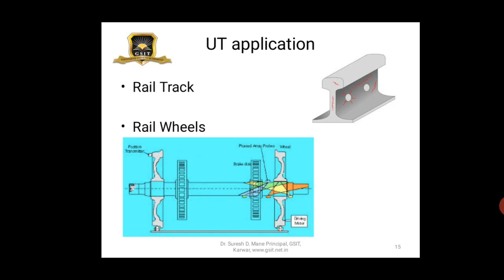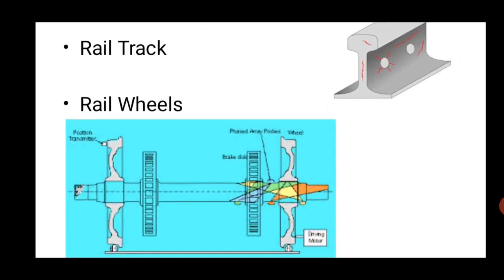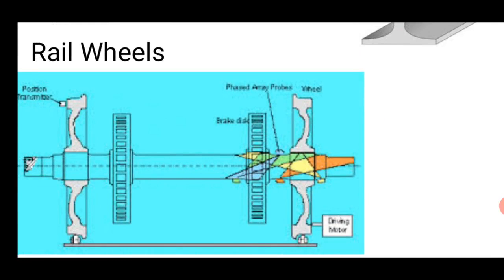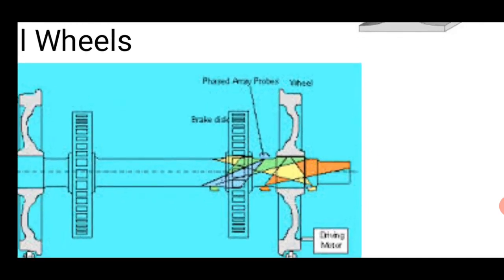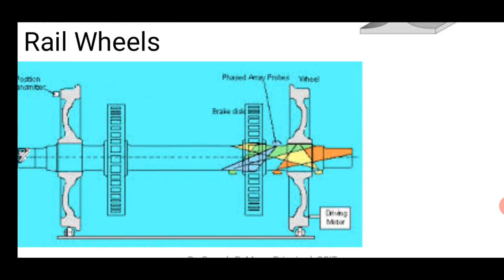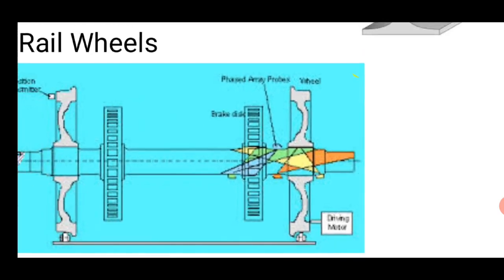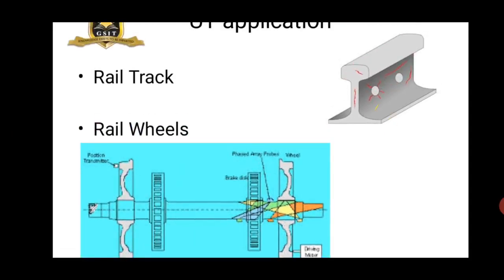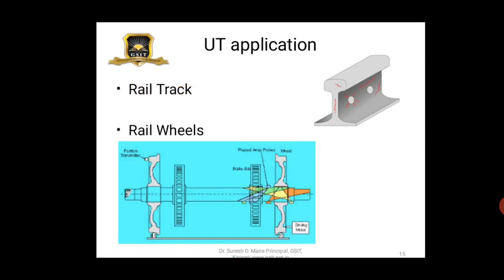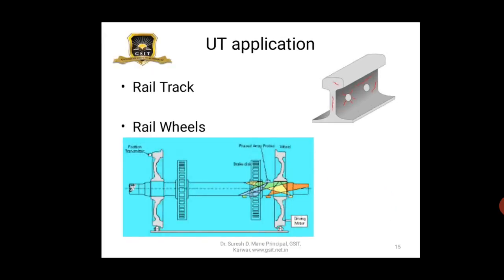For railways, ultrasonic testing is extensively used for checking rail axles — whether coach axle or loco axle. You can see the axle with the wheel mounted; the interface area is very critical. Different types of probes — short angle, long angle — send ultrasound waves and receive them back to find out the condition of the axle. Railway tracks are also checked; earlier manually, but now self-propelled vehicles check the entire track for ensuring safety.